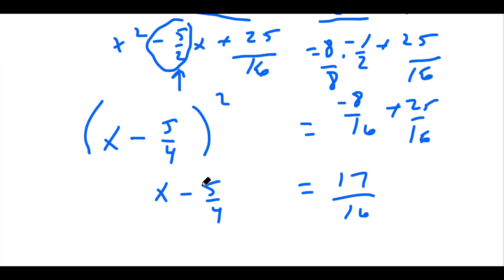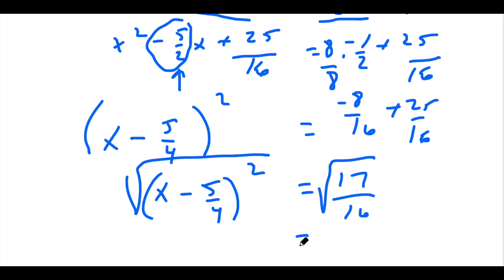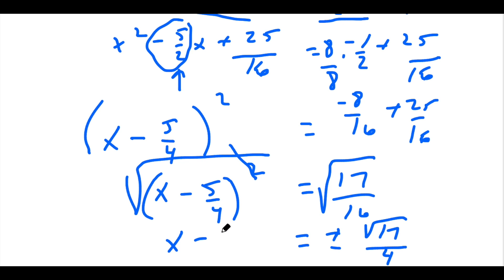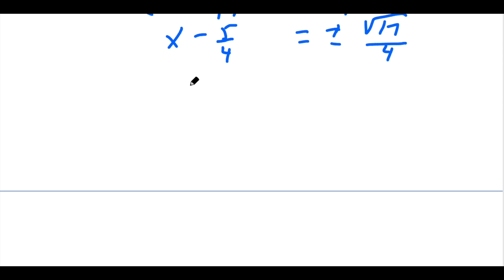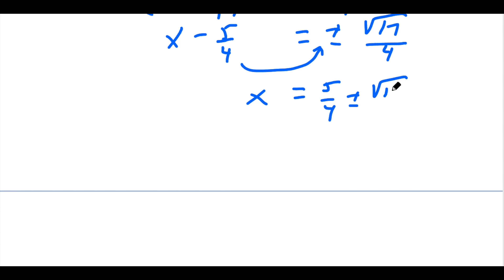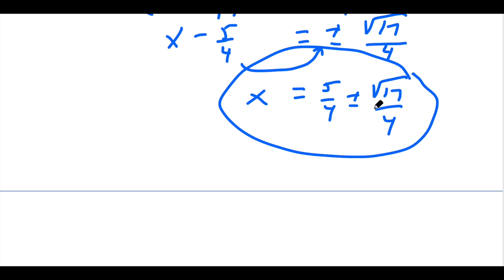Now we've completed the square. All we need to do is solve by taking the square root of both sides of the equation. And remember, when you do that, you get your two answers. The square root of 17 we can't simplify, but the square root of 16 is just going to be 4. The square and the square root cancel one another out — we're left with x minus 5 fourths. The last thing to do is get x by itself, so I'm going to add 5 fourths to both sides of the equation. What you want to do is put that 5 fourths in front of the plus or minus, so it's going to be 5 fourths plus or minus the square root of 17 over 4. You can do this on your calculator, or you can leave it like this as an exact answer.